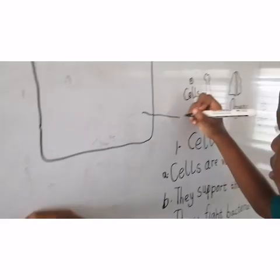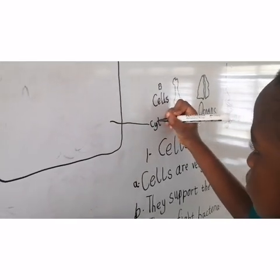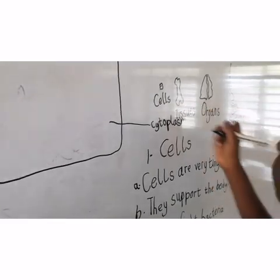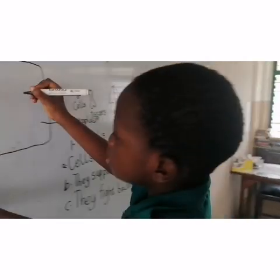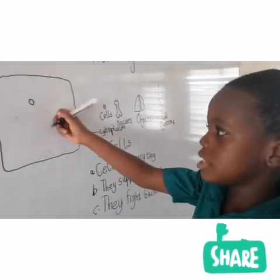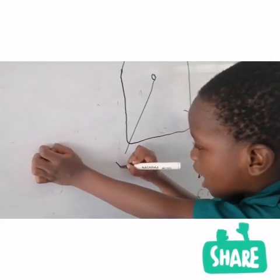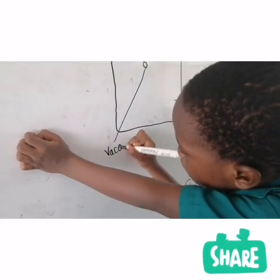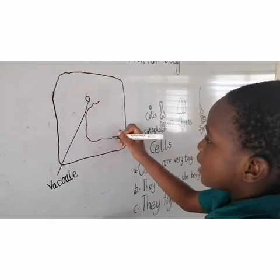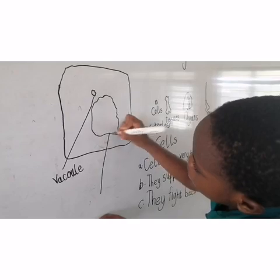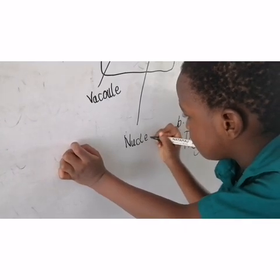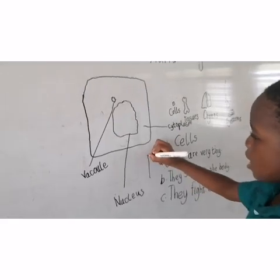What is inside the cell membrane? So there are some things called vacuoles. Animals have small vacuoles. That's why there is the vacuole. That's the nucleus. And I forgot — it's the cell membrane.